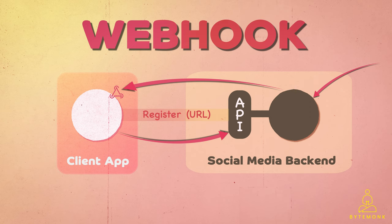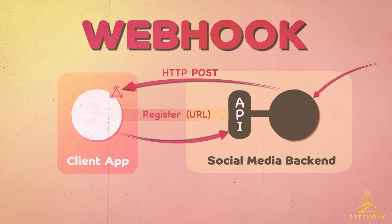When a client registers a webhook URL with a server, it's essentially telling the server: send me updates to this URL whenever something relevant happens. The server can then send HTTP POST requests to the client whenever a relevant event occurs — such as a new message in a chat app, a new order in an e-commerce app, or a new comment in a social media post. When the server sends an HTTP POST request to the webhook URL, it includes data about the event in the request body, in a format both sides understand, such as JSON or XML. The client can then use this data to update its own state and display the new information to the user.